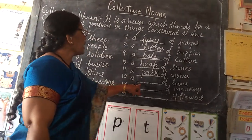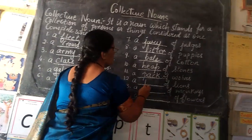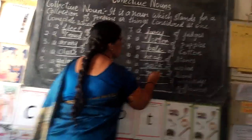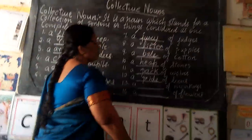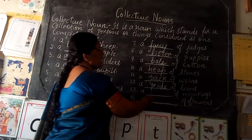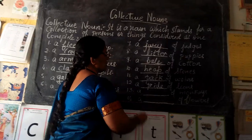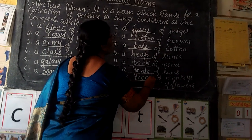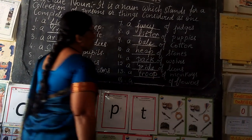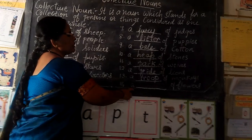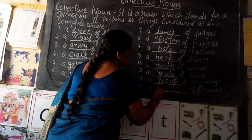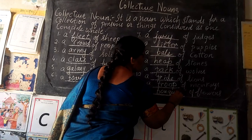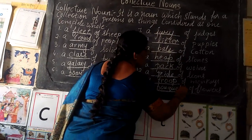A dash of lions — a pride of lions. A dash of monkeys — a troop of monkeys. A dash of flowers — a bouquet of flowers.